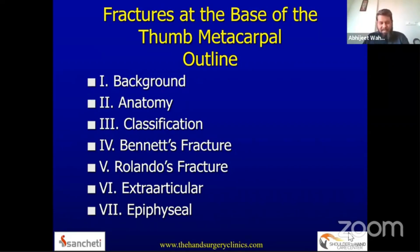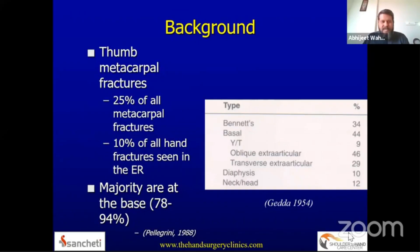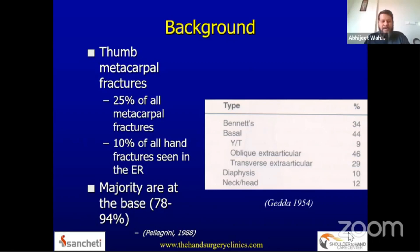We'll also be talking about extra-articular and epiphyseal fractures. Metacarpal fractures of the base of the thumb account for almost 25 percent of all fractures of the metacarpal and about 10 percent of all hand fractures seen in the emergency room. About 78 to 94 percent of all these fractures involve the base of the first metacarpal, from a study by Pellegrini in 1988.